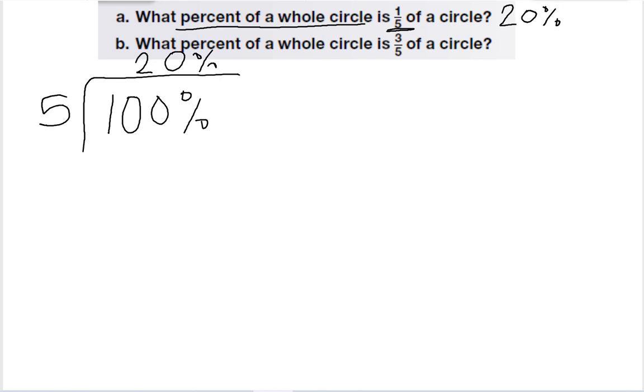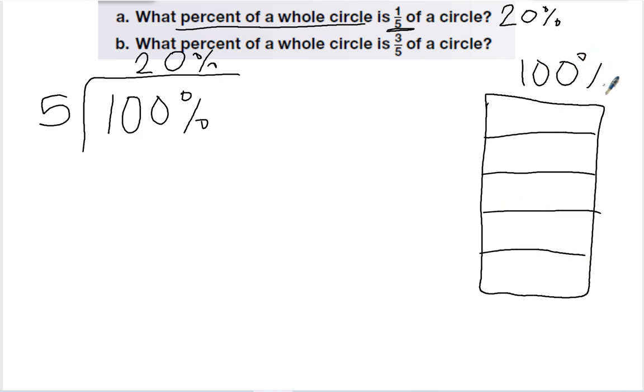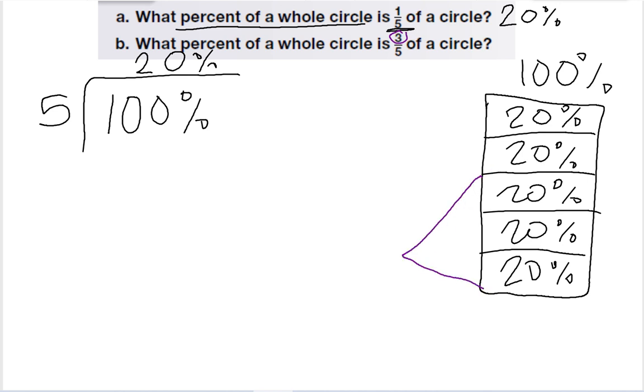To figure out what three-fifths is, I'm going to go ahead and draw that diagram again. It's broken up into fifths. A hundred percent at the top. And I already know that a hundred percent divided by five is twenty. So twenty percent goes in each of these boxes. So then I just need to figure out what three-fifths is. So here's one, two, three. Twenty percent times three is sixty percent. So three-fifths of a circle equals sixty percent.